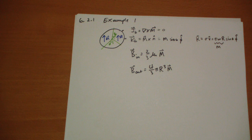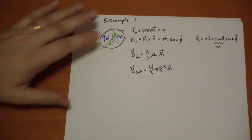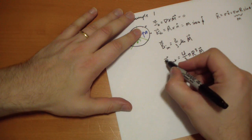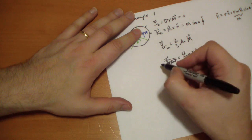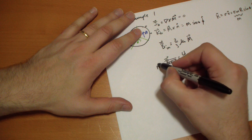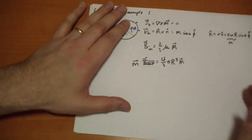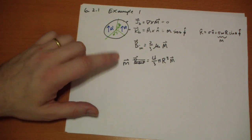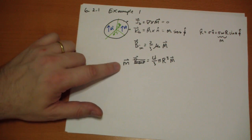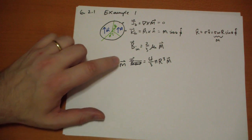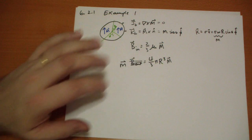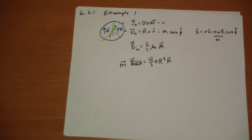On the outside, the outside field is not equal to that. This behaves as a pure dipole with the magnetic dipole moment of four-thirds pi R-cubed capital M.